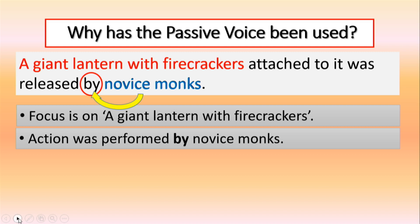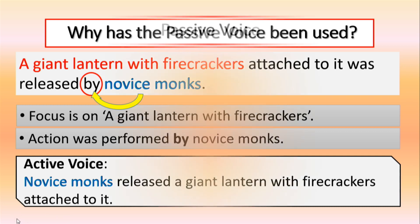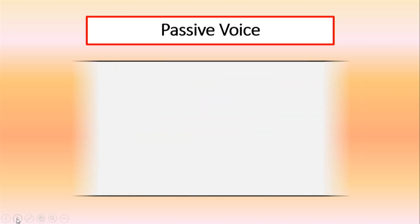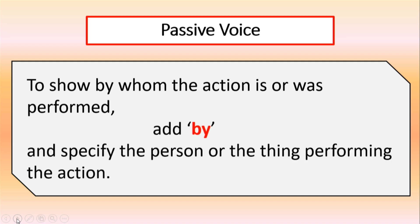In the active voice, the sentence would have read: Novice monks released a giant lantern with firecrackers attached to it. In the active voice, the emphasis would have been on novice monks and not on the giant lantern. So remember: in the passive voice, when we want to show by whom the action is or was performed, we add the preposition by, then specify the person or thing performing the action.